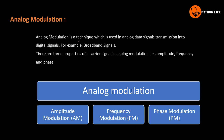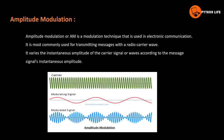Analog modulation is the technique used for transmitting analog data signals. There are three properties of carrier signals in analog modulation: Amplitude, Frequency, and Phase. Analog modulation is of three types: Amplitude Modulation (AM), Frequency Modulation (FM), and Phase Modulation (PM).